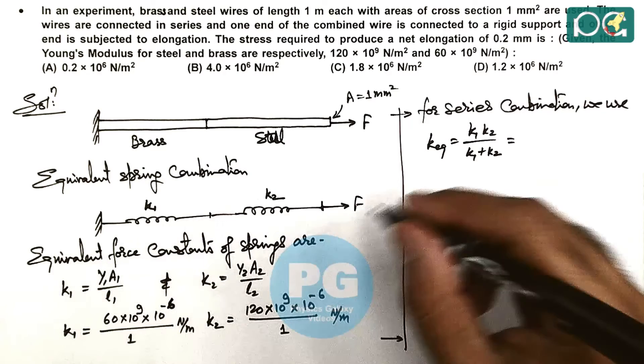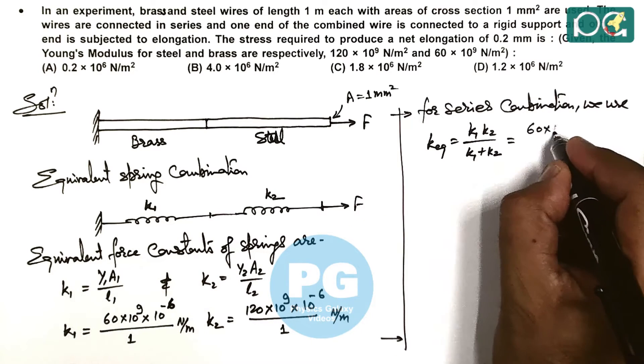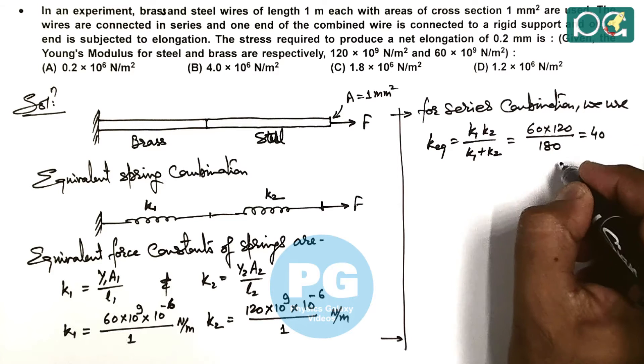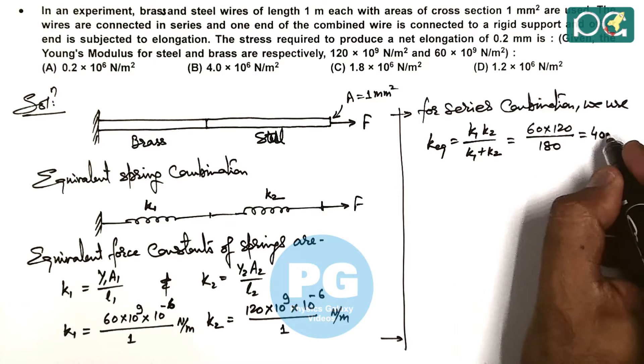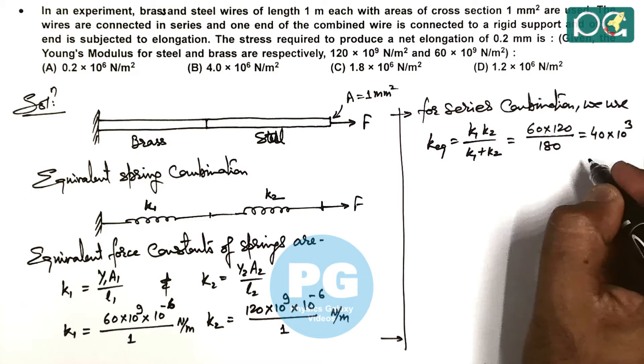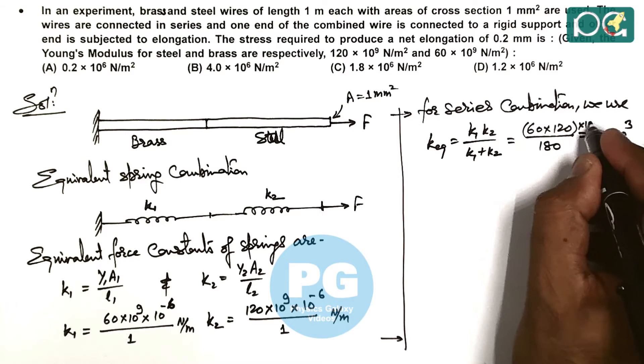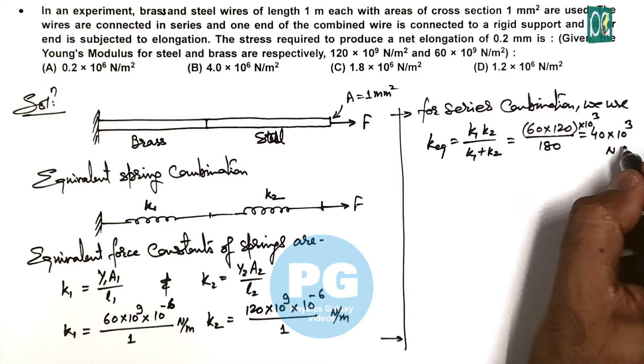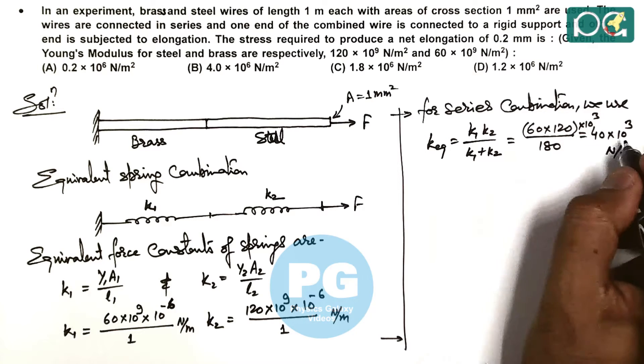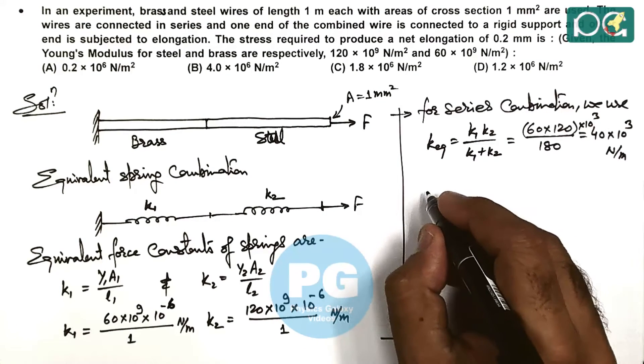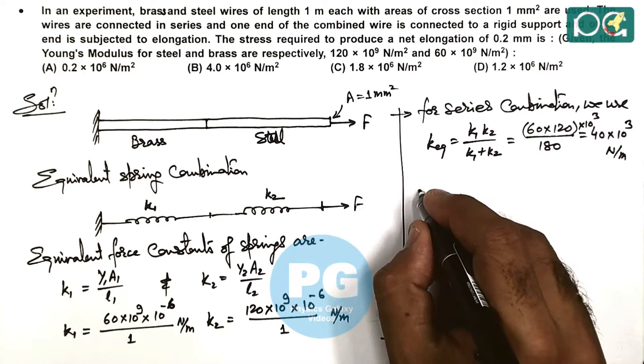This gives us 60 multiplied by 120 divided by 180, that equals to 40, whole multiplied by 10^3. So this is 40×10^3, which is 40,000 Newton per meter as the equivalent force constant.